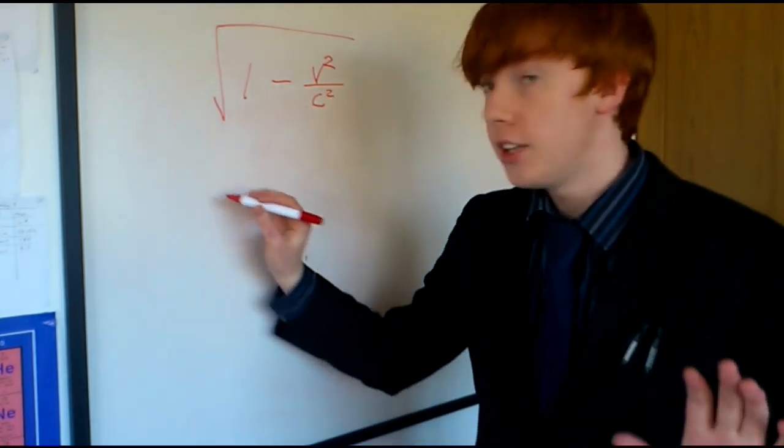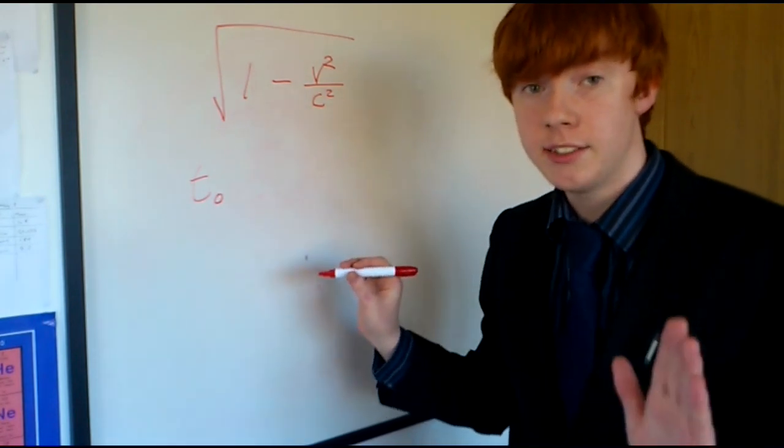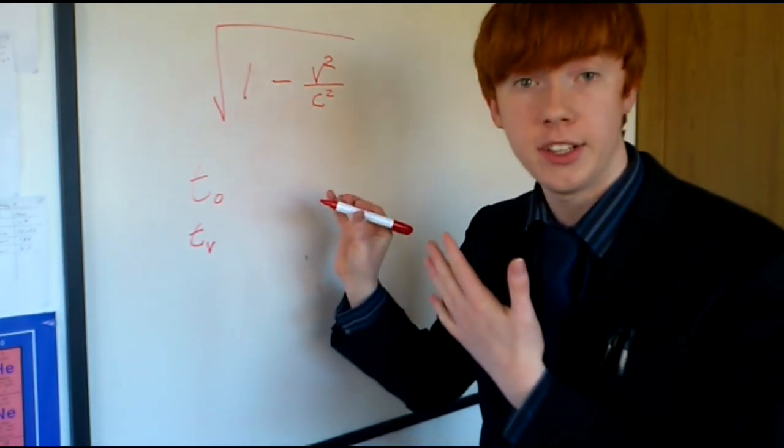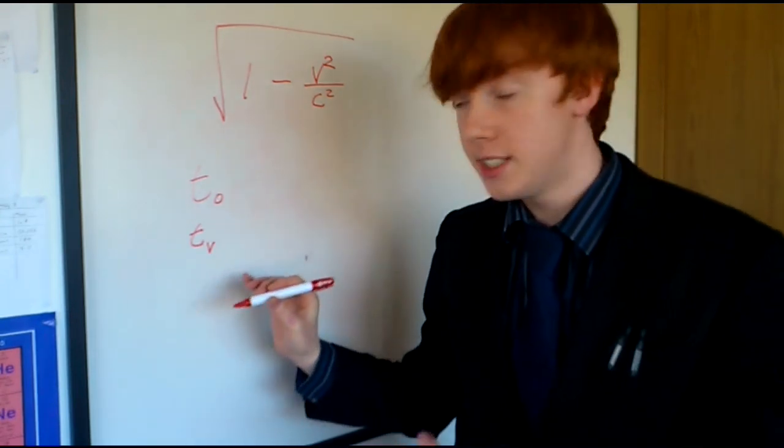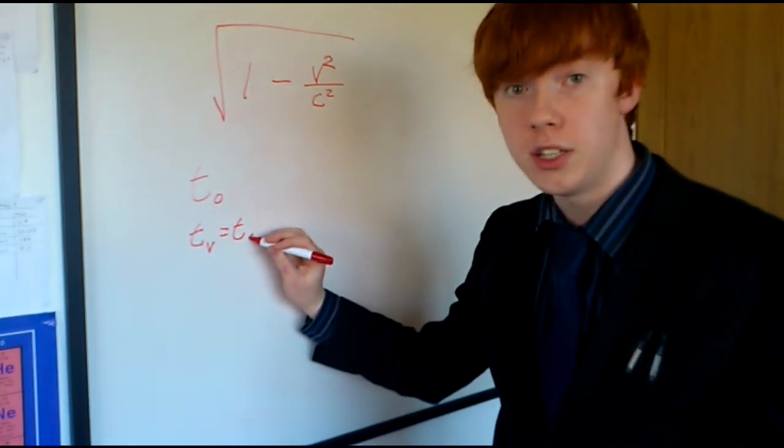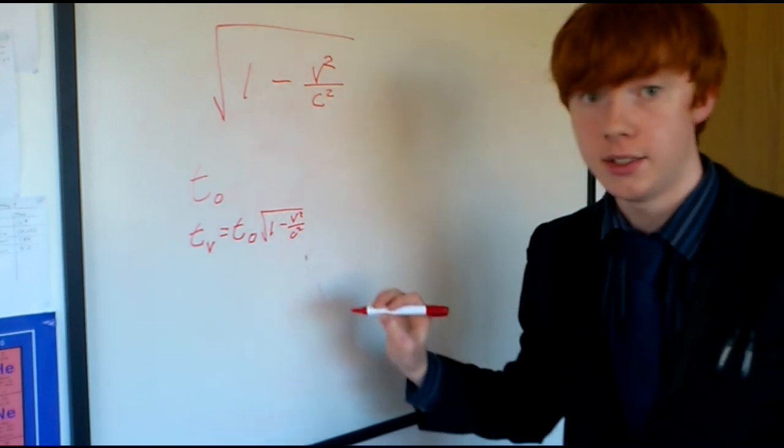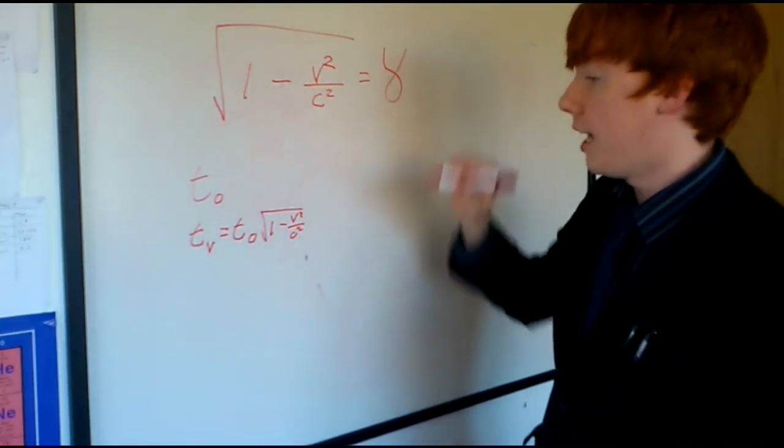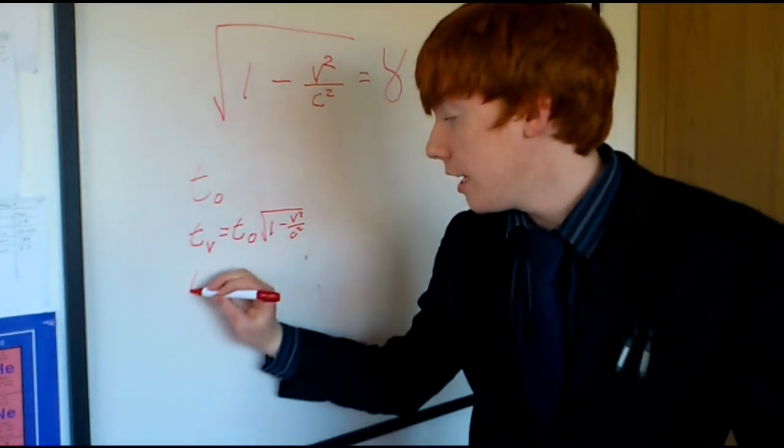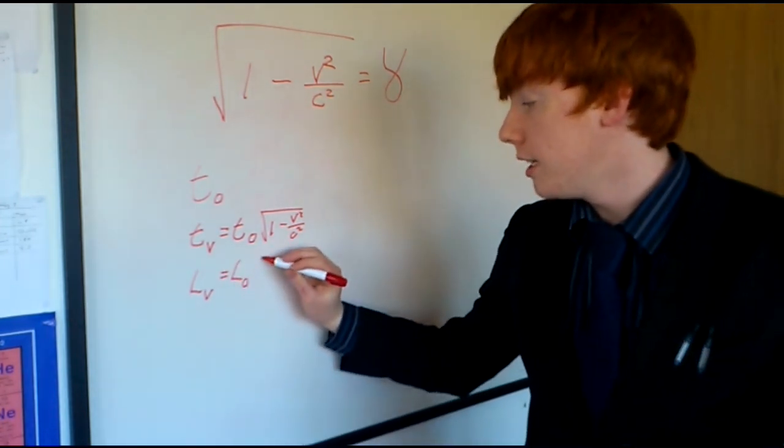Say when you're completely still, the amount of time that passes, I'm going to write as t with a little zero there. But, the time that passes while you're moving is different, so I'm going to say that that's t with a small v here, to say that it's the time that passes when you're moving at a velocity. Now, the way that you calculate the time when you're moving at a velocity is you just times the time that passes while you're still by the root of one minus the velocity squared over the speed of light squared. And the way that gamma is written is it tends to be just that.